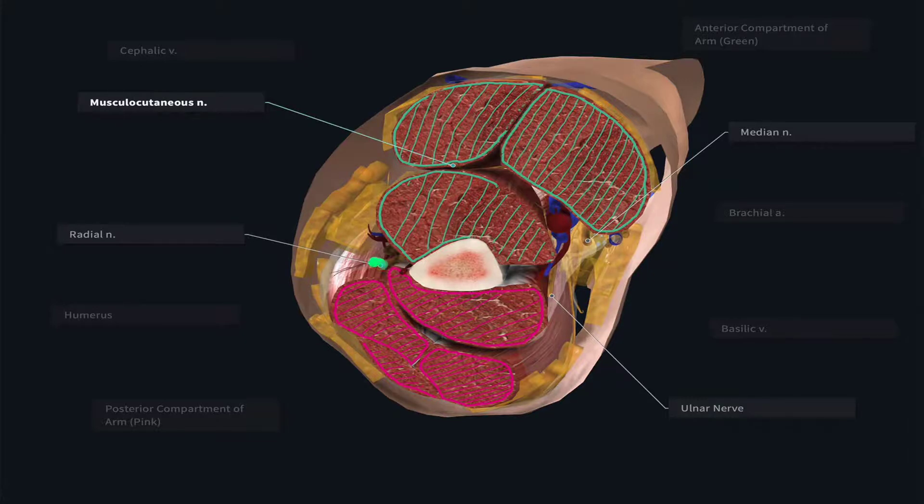Similarly, near the posterior compartment of the arm, we're going to see a nerve known as the radial nerve, which is responsible for providing motor innervation to the muscles within this posterior compartment.